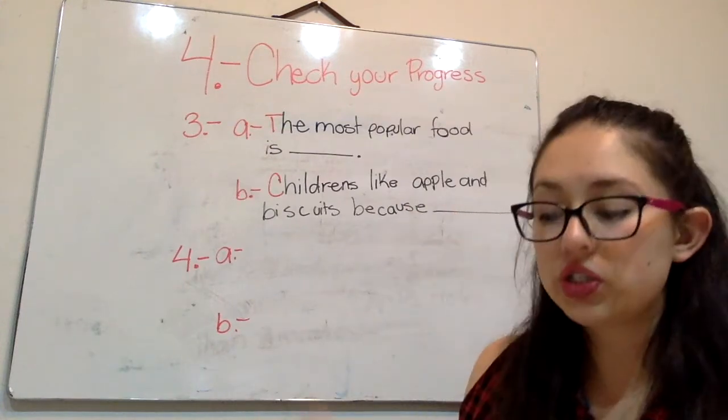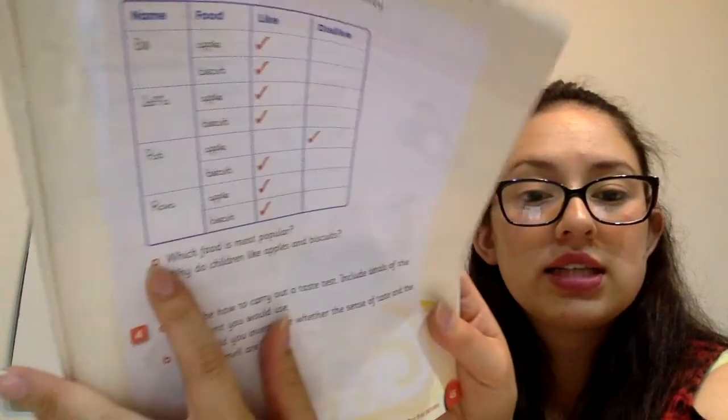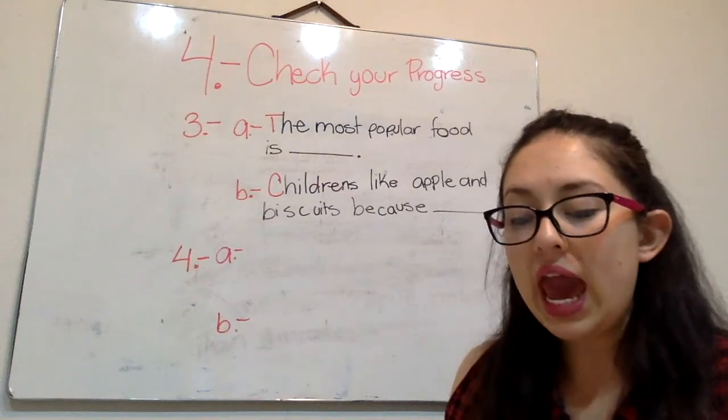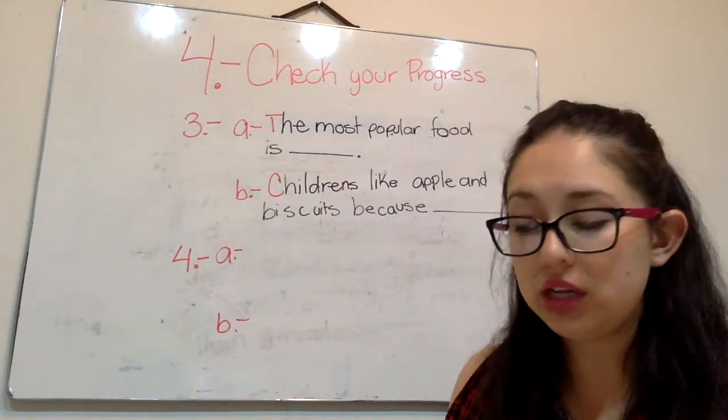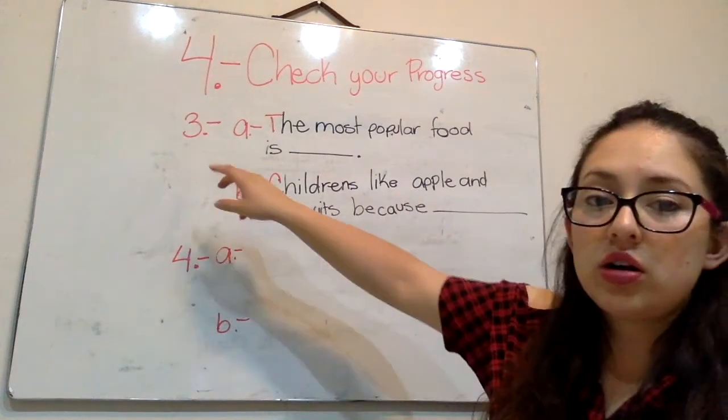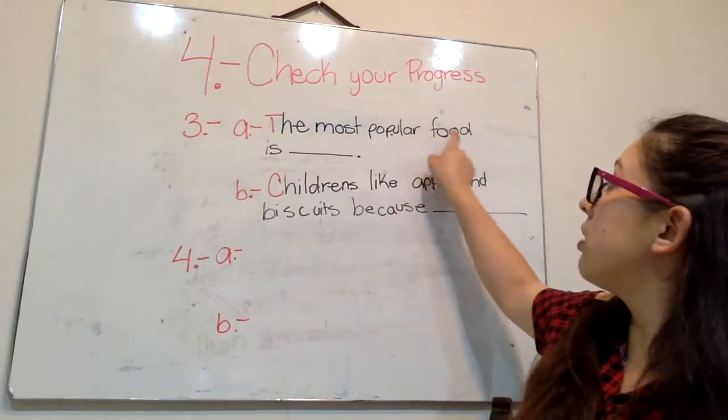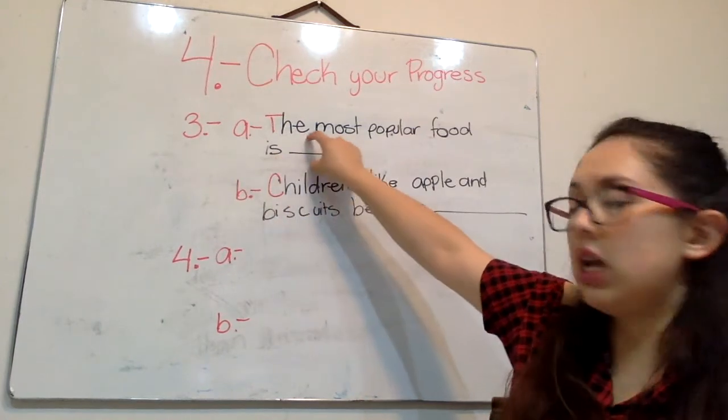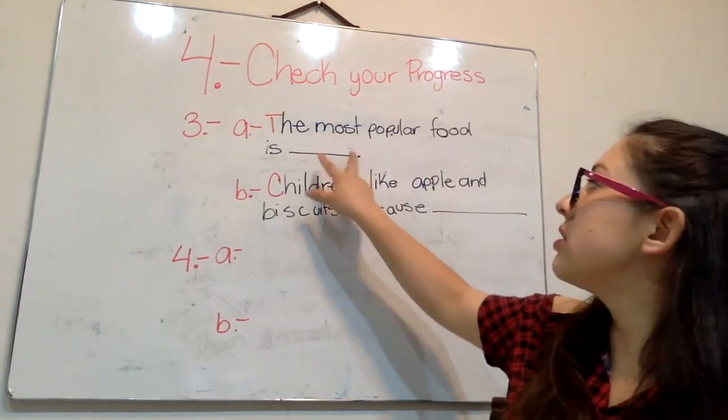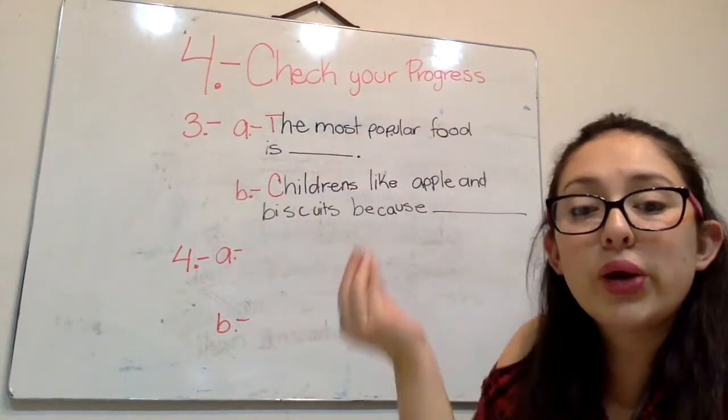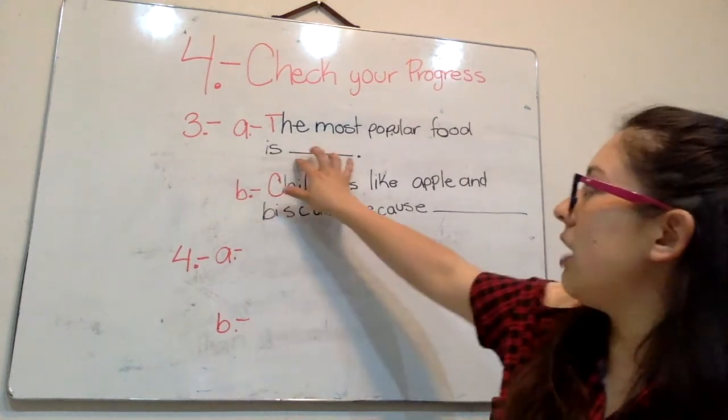But we have two questions, the first one here it's a and b. Letter a, which food is the most popular. So you're gonna write number 3 a, the most popular food is, and you're gonna write the food. Este solo es un espacio sugerido verdad, pero si ustedes se llevan dos líneas aquí está bien.